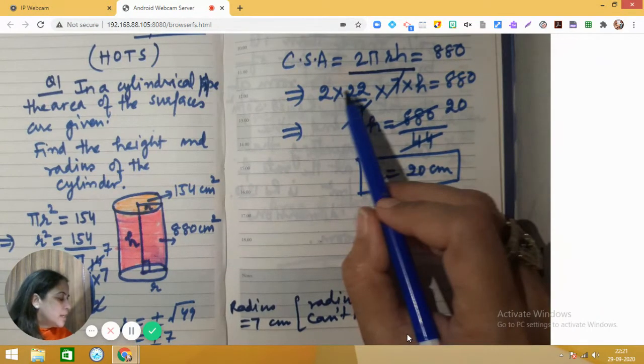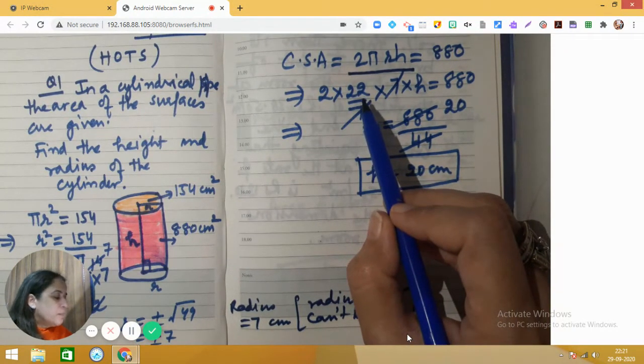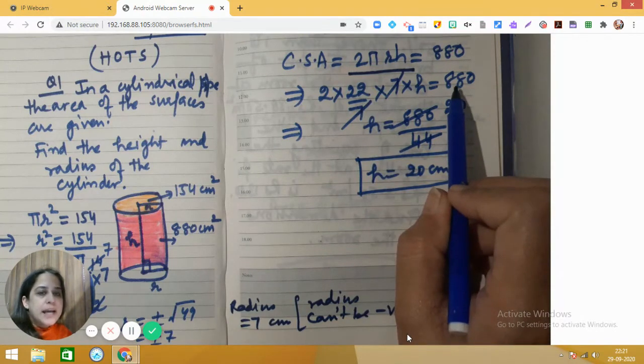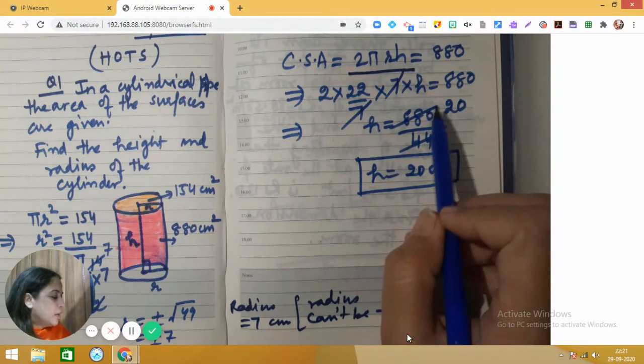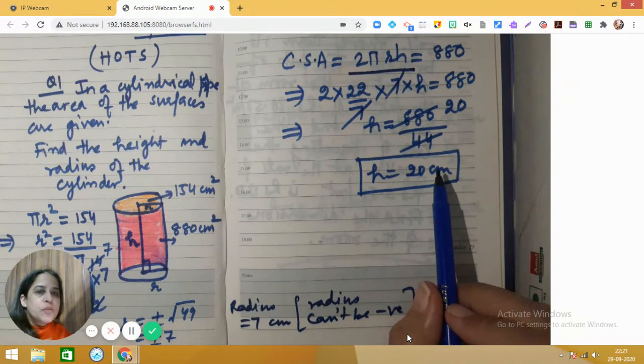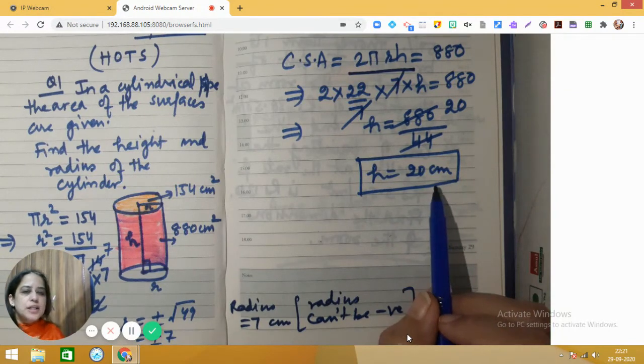So 2 into 22 by 7 into 7 into h equals 880, so we can simplify this expression and get height as 20 centimeter. So I hope this question is clear to you.